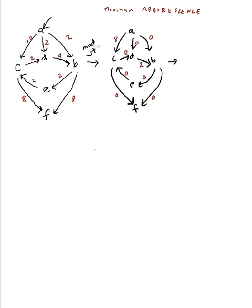The first step was to modify the weights. The next step is to choose the zero-cost edges. Coming into B I only have one zero. Coming into C I only have one zero. Coming into D I have two zeros so I could pick either one. Coming into E I have only one zero. Coming into F I have two zeros so I could pick either one.